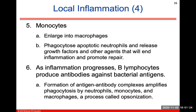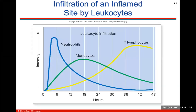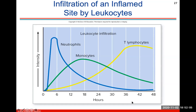As inflammation progresses, B lymphocytes will produce antibodies against bacterial antigens. This shows infiltration of an inflamed site by leukocytes over the period of hours. Neutrophils come in very strong and intense to that area first. Then monocytes follow, and then T lymphocytes follow. This is a 48-hour time lapse showing how leukocytes get there and how quickly they arrive.